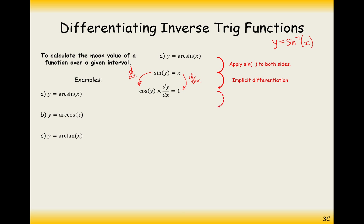To rearrange and find dy/dx, I'll divide by cos y. So the answer is dy/dx equals 1 over cos y. But generally people aren't happy with this because there's y in the answer where there was x in the question, so we need to find a link between cos y and arc sine x.